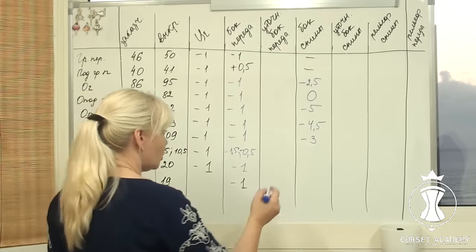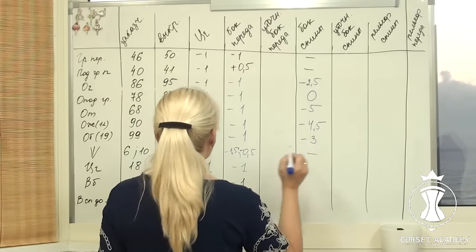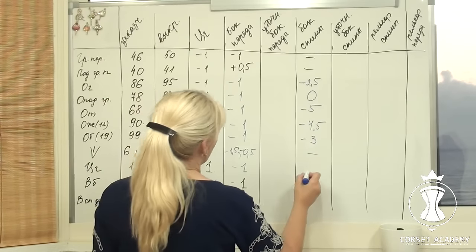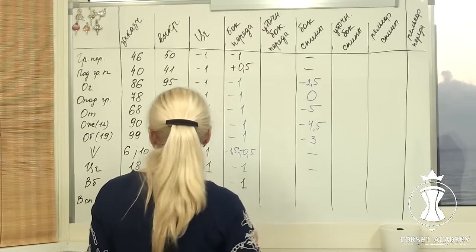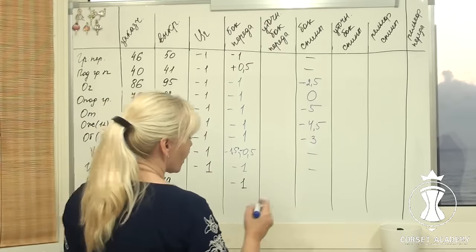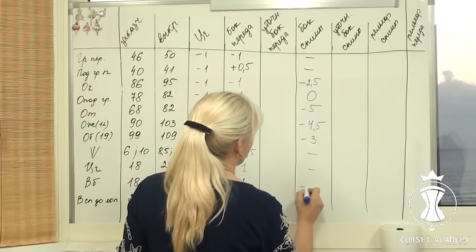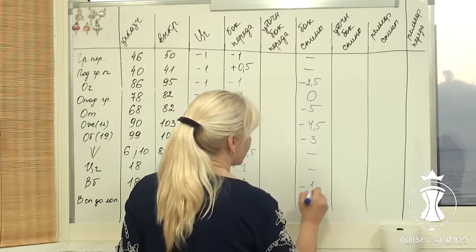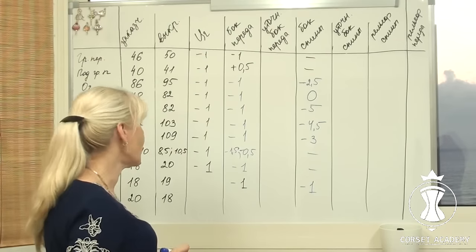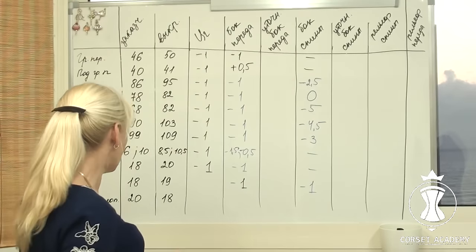Clip, bust middle, and blade height back are not involved in the calculations. The side length measurement is adjusted the same way as on the front half of the dress.